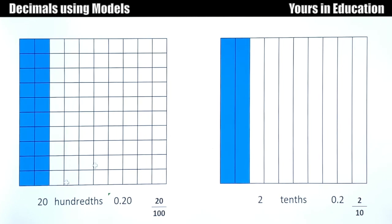Here on the left side we have 20 hundredths, 20 out of 100, and on the right side they are equivalent. We have 2 tenths. You write it 0.2, and it is 2 out of 10.